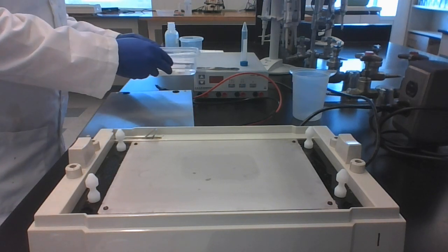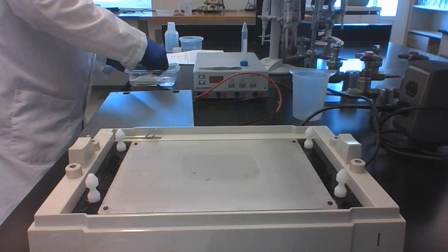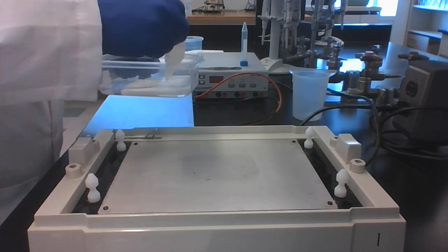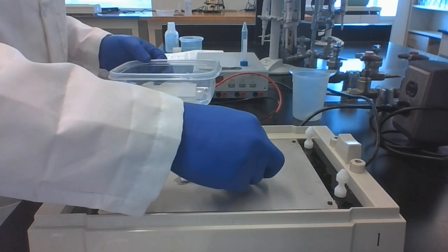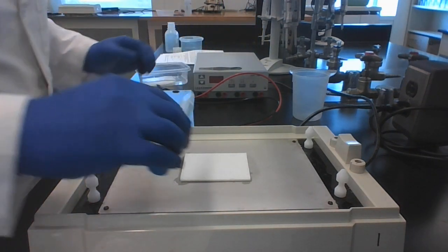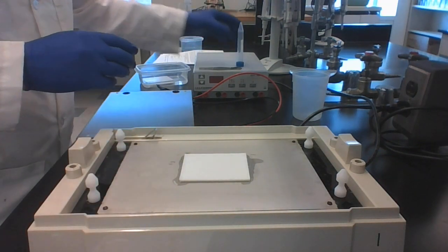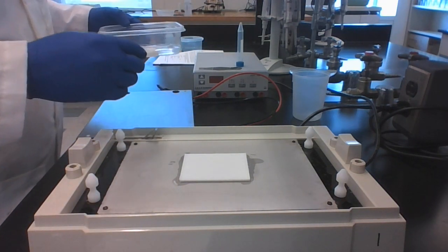So now that these are equilibrated, we just take them when we first put down a filter paper. And then we take some sort of tube and we just roll out any air bubbles. If there are air bubbles that can inhibit the transfer of any proteins.